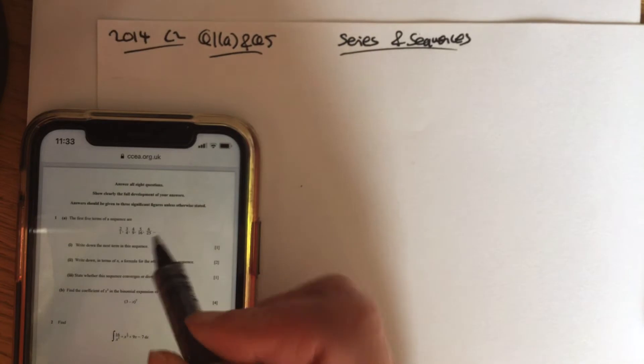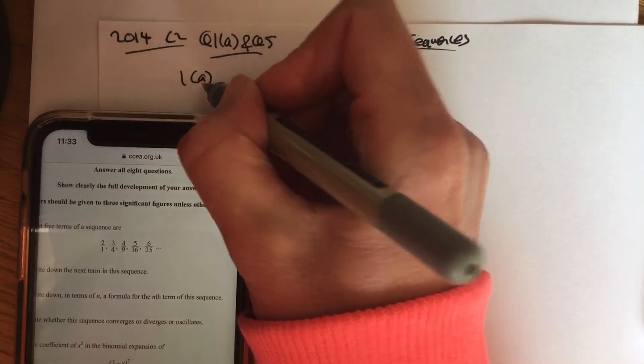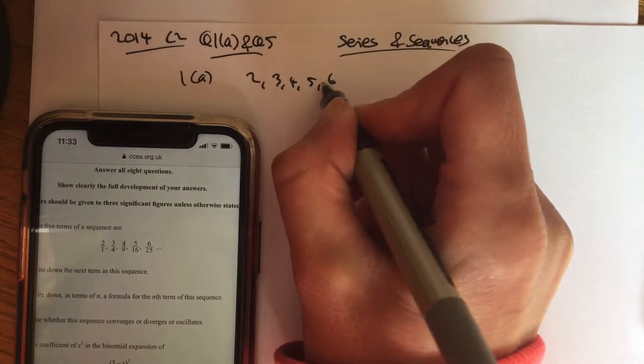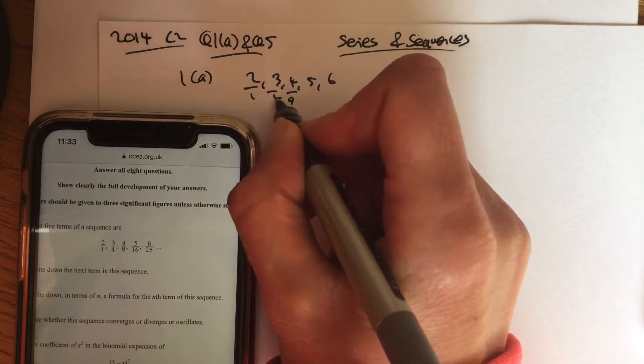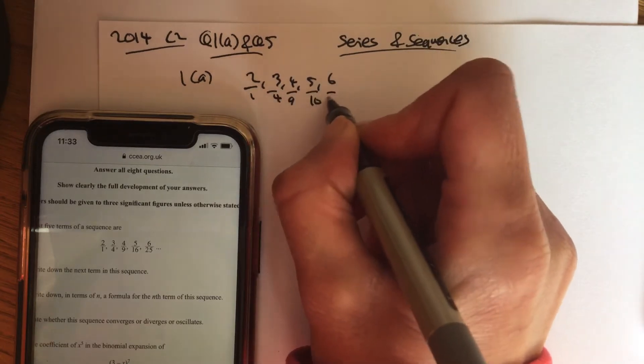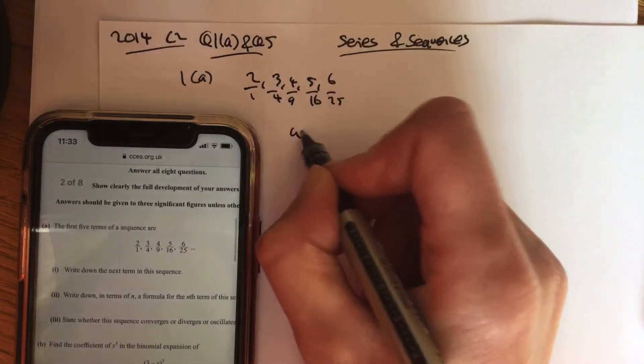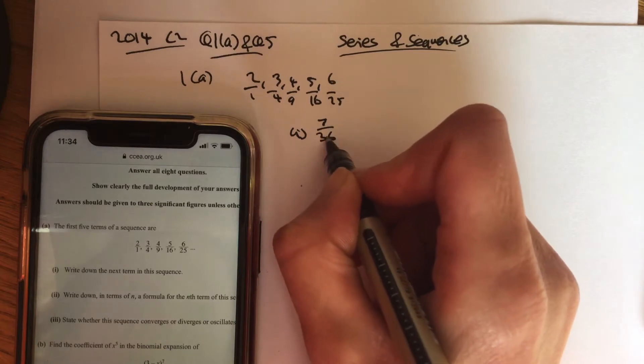Question 1a says you've got this sequence here. So it's starting off, the top line is 2, 3, 4, 5, 6, and the bottom line are your squared numbers. And the question is asking you, part 1, write down the next term in the sequence. So it's just going to be 7 over the next squared number, 36.